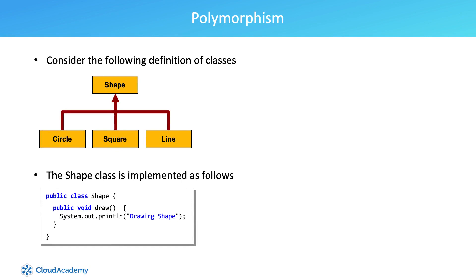Polymorphism is one of the most powerful concepts of object-oriented programming. The key to polymorphism is deciding at runtime exactly what kind of object we are working with. Polymorphism comes from the Greek — poly meaning many, morphism meaning forms — many forms.